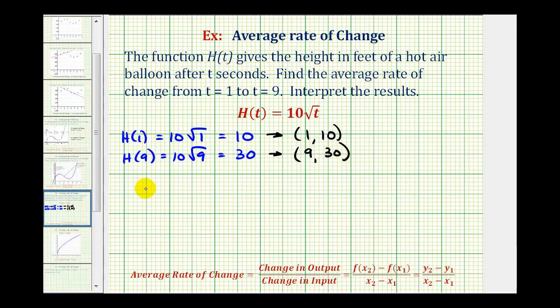Now we have the information we need to determine the average rate of change from t equals 1 to t equals 9. We'll first determine the change in the function values, or y values, which are 30 and 10. So we'd have 30 minus 10.